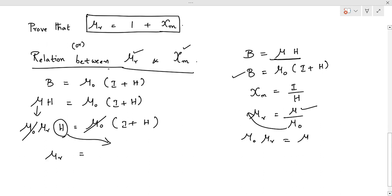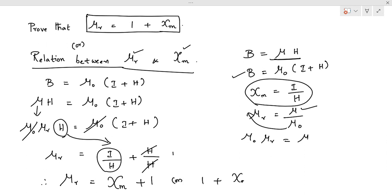We get mu R is equal to I by H plus H by H. H by H is 1. I by H is magnetic susceptibility. Therefore, relative permeability mu R is equal to the magnetic susceptibility chi M plus 1, or 1 plus chi M.